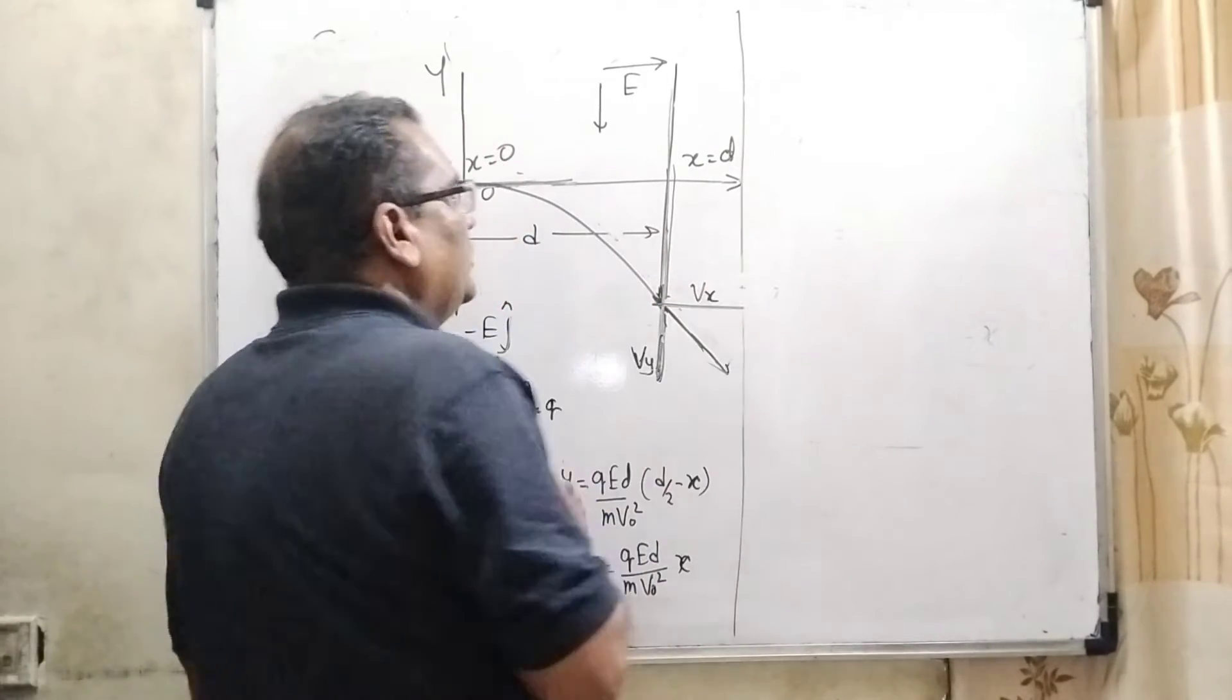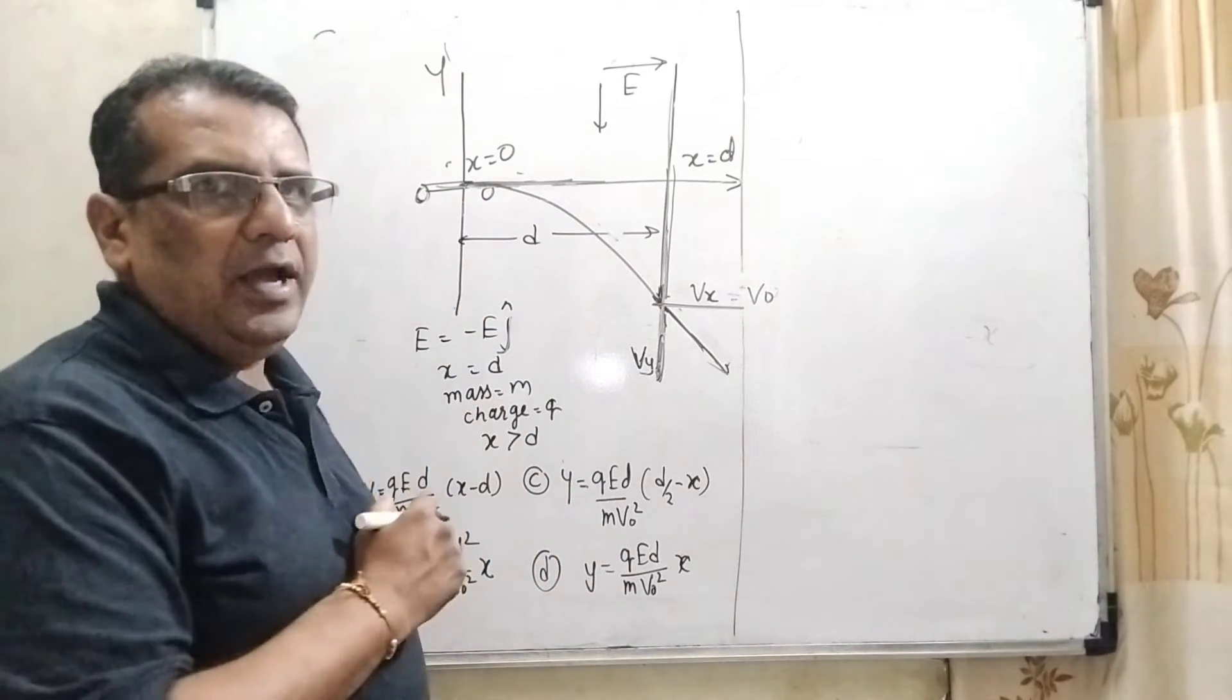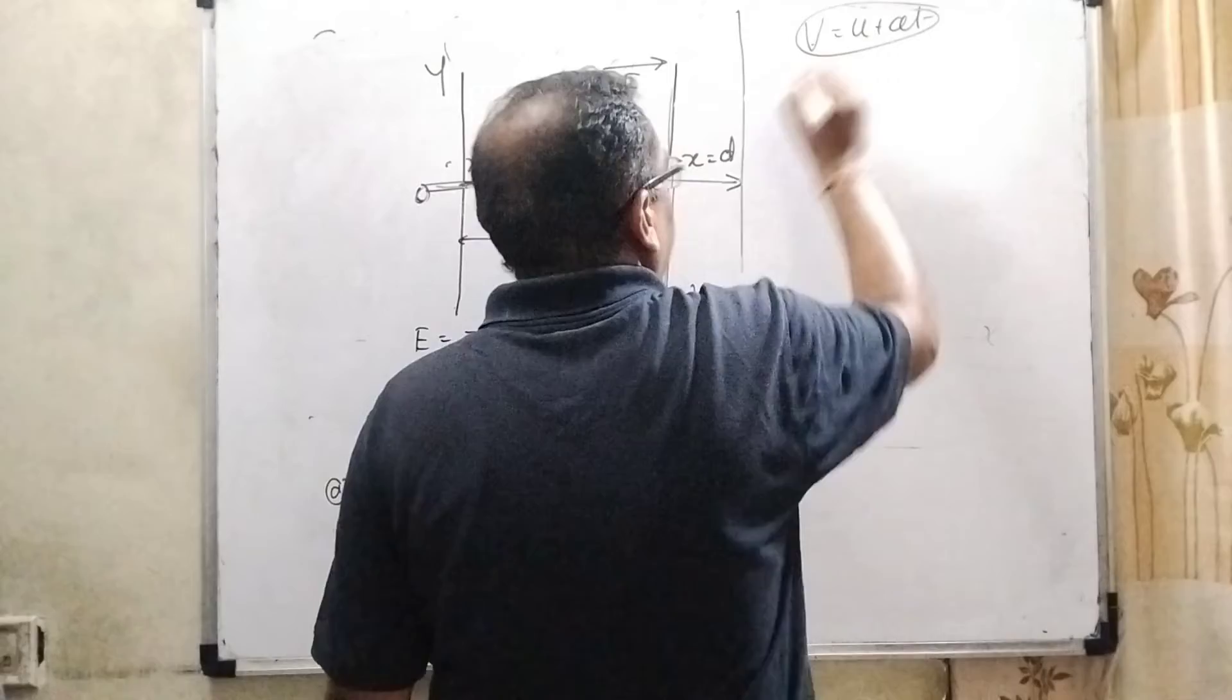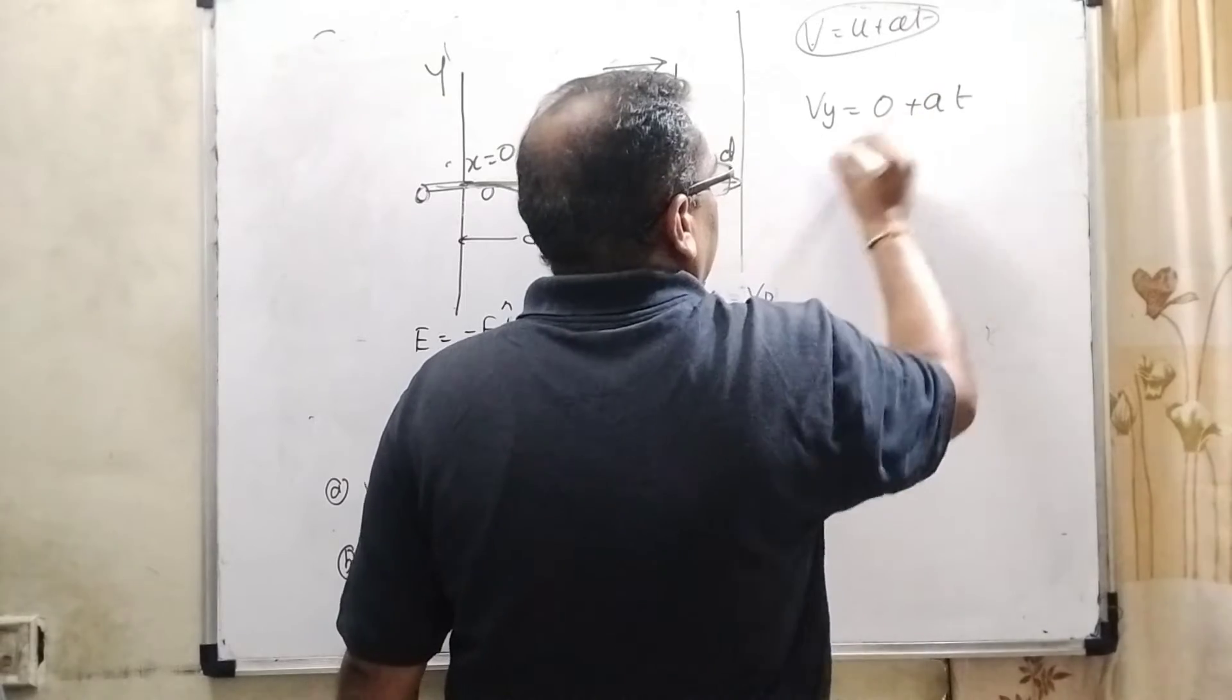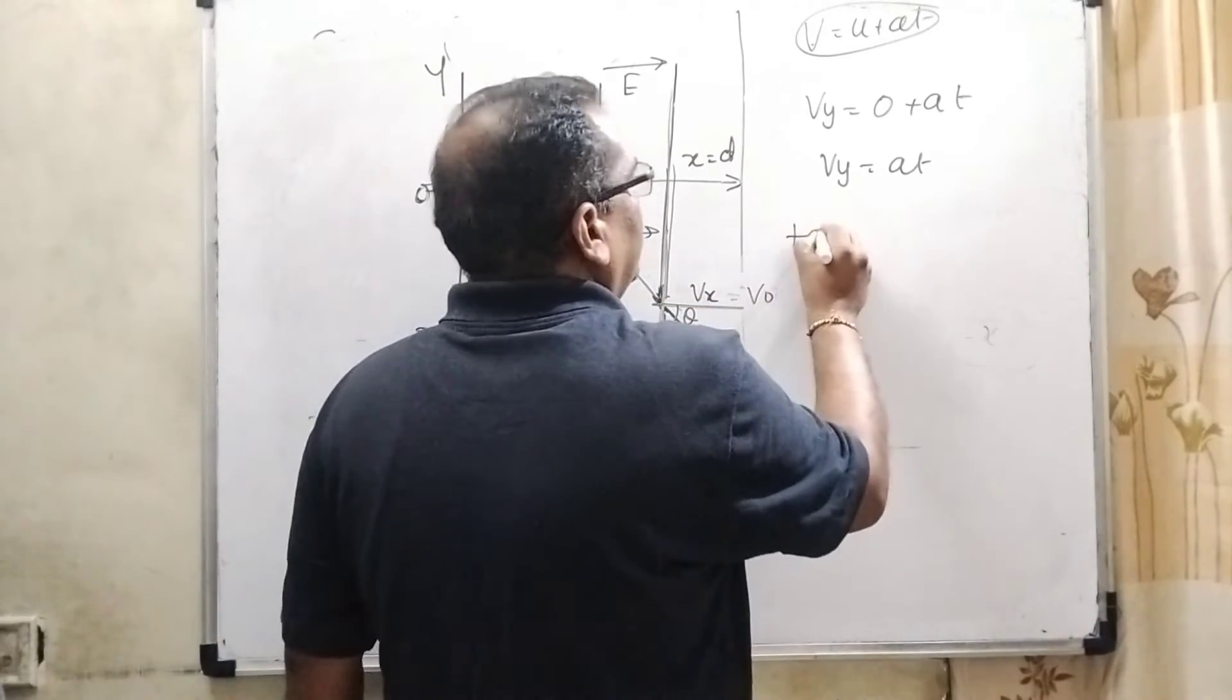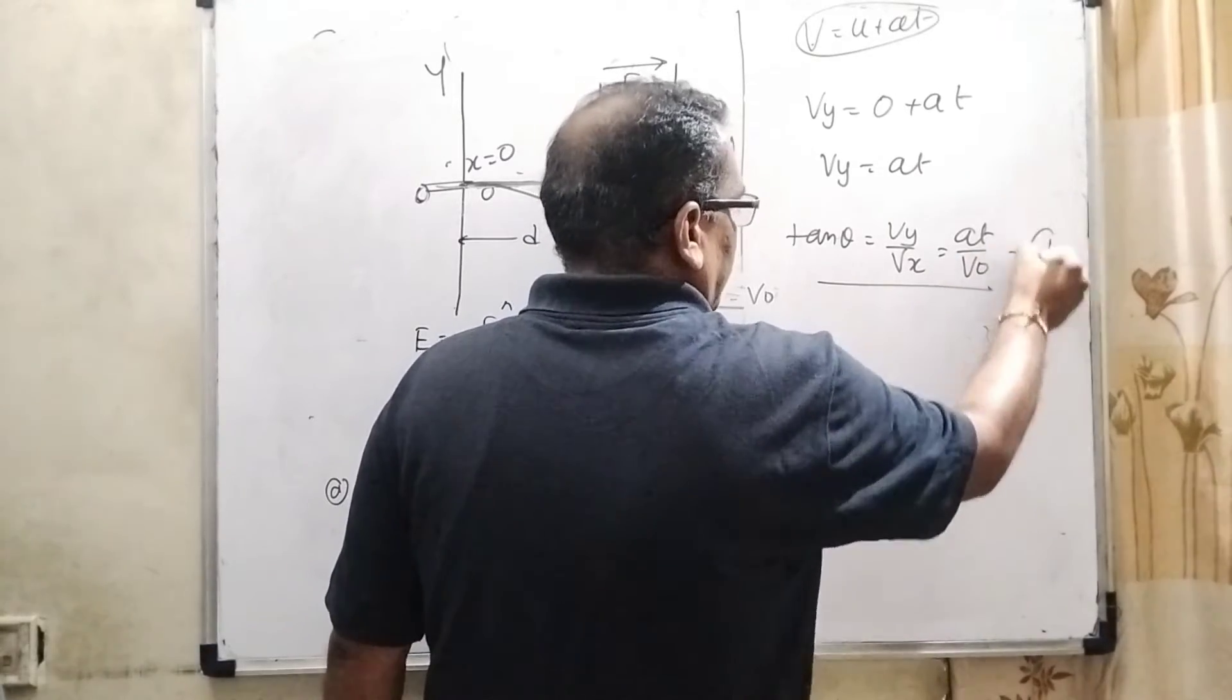Here vx, we know that the x component of velocity is constant. So vx equal to v0. And vy, how you can get the vy? By using equation of kinematics: v equal to u plus at. We are using this formula. Here vy component, initial velocity of y component, that is zero. And here the a and that is t. So vy equal to at. So if we have considered this is theta, then tan theta equal to vy upon vx, that is at upon v0. So it is equation number first.